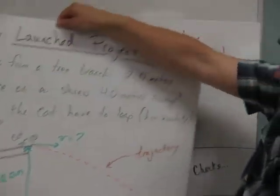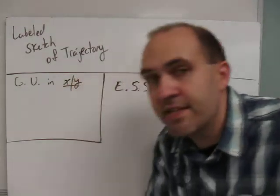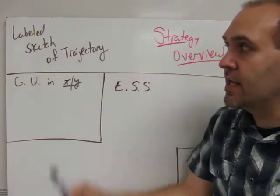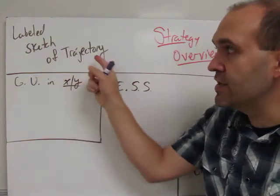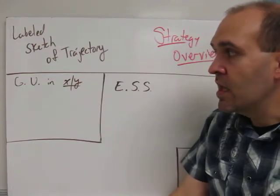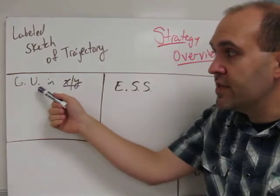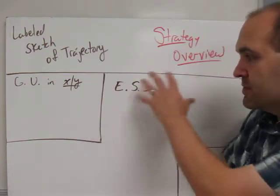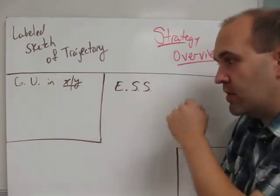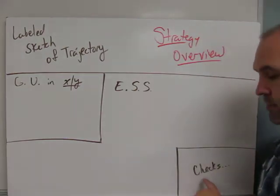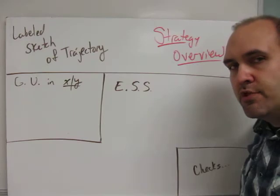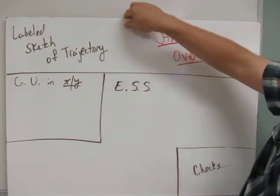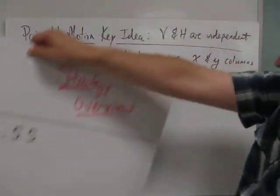Before we go any further, let's get an overall strategy that we're going to use to solve these projectile problems for this unit. The first step in your strategy is to label the sketch of the trajectory. Then we're going to use the GUESS method, but sort of a modified version. Our givens and unknowns we're going to organize in an x and y chart, and there's some space to write equations, substitute and solve. In the corner we're going to make sure we do some answer checks to make sure that we've got everything done that we need to get done for a complete problem solution.